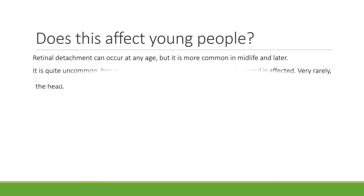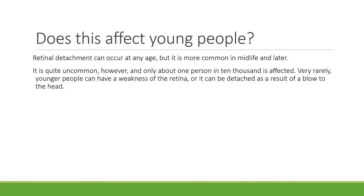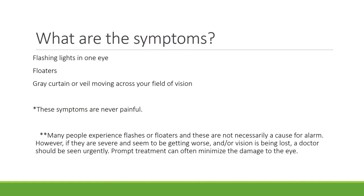Very rarely, younger people can have a weakness of the retina, or it can be detached as a result of a blow to the head. The symptoms of retinal detachment are flashing lights in one eye, floaters, and a gray curtain or veil moving across your field of vision. These symptoms are not painful. Many people experience flashes or floaters, and these are not necessarily a cause for alarm.